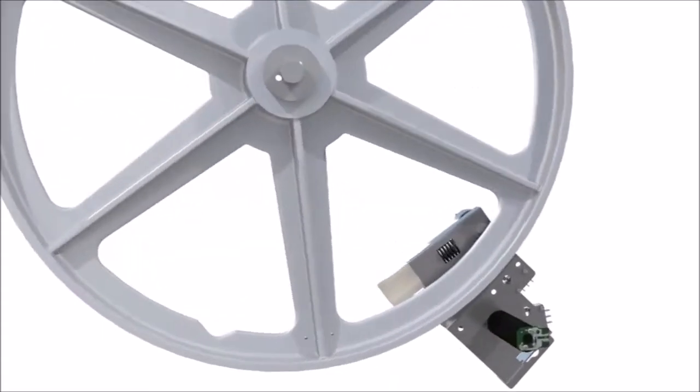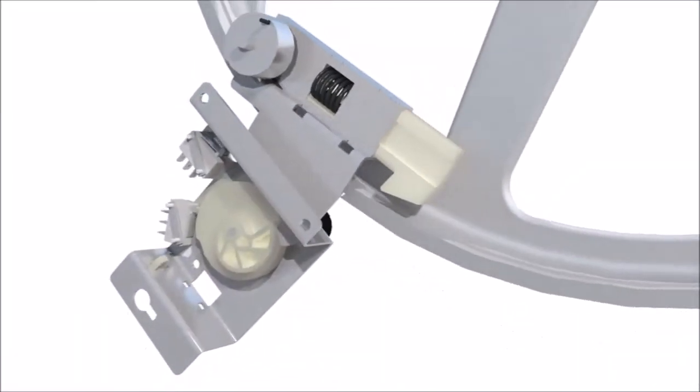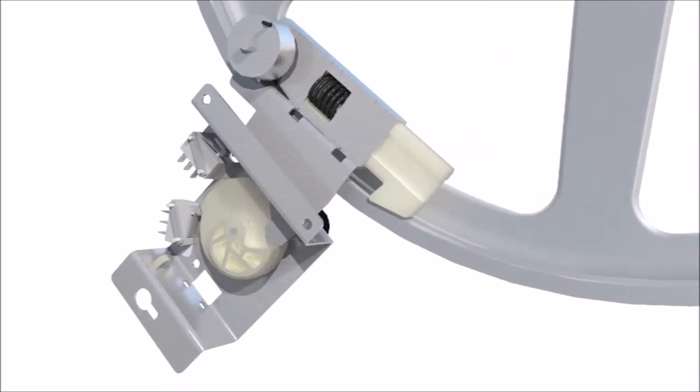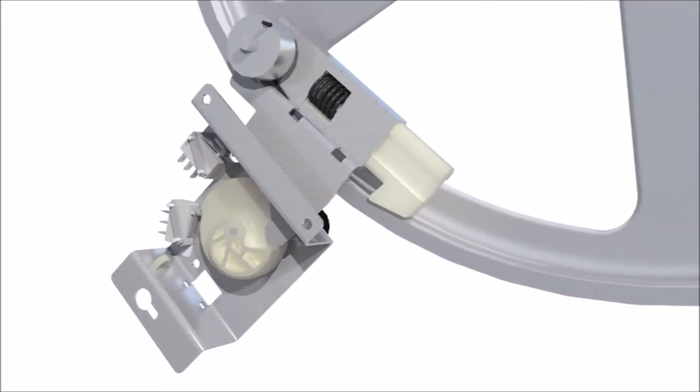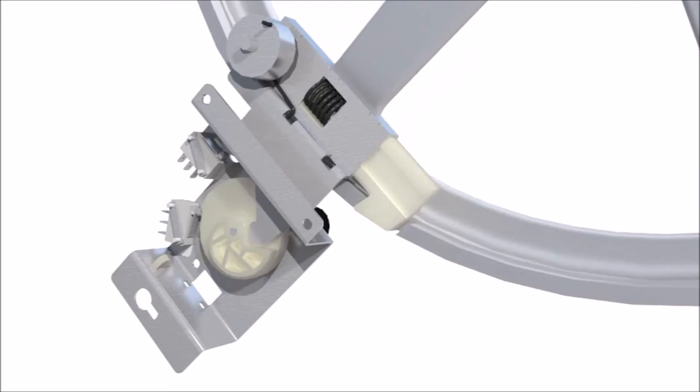At the end of the cycle, the drum automatically aligns itself with the door aperture. The drum locks into position, perfect for unloading the laundry.